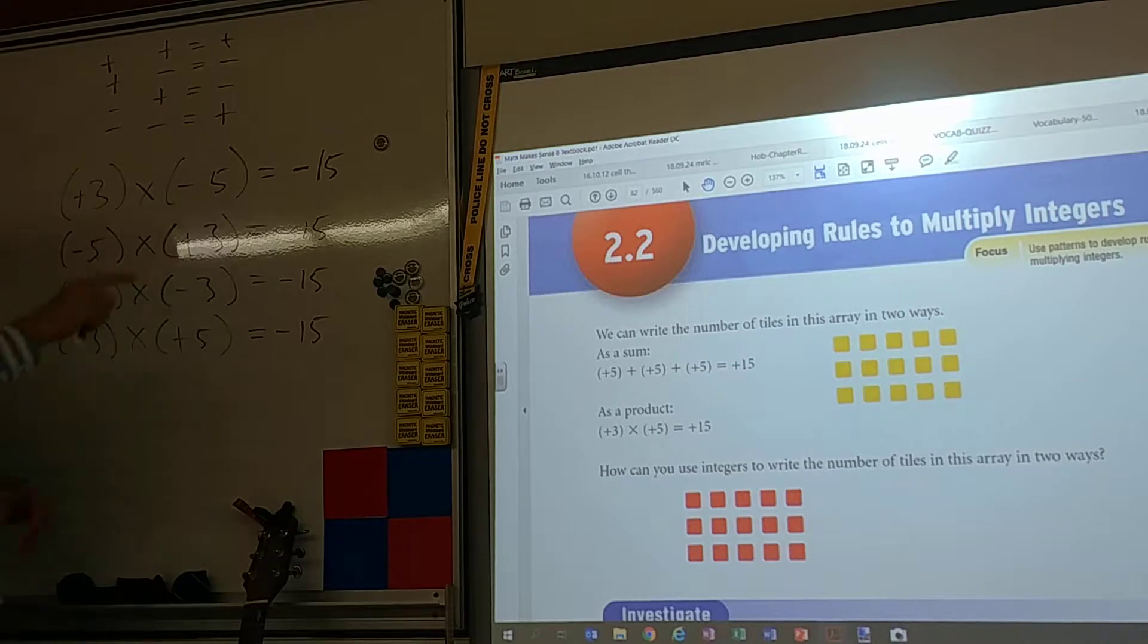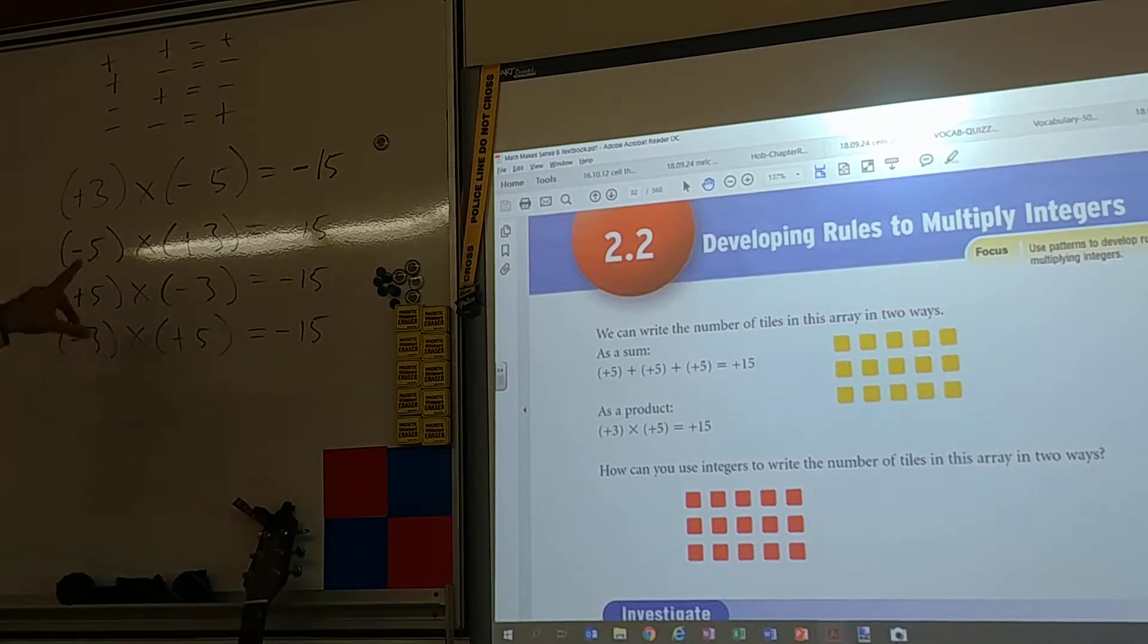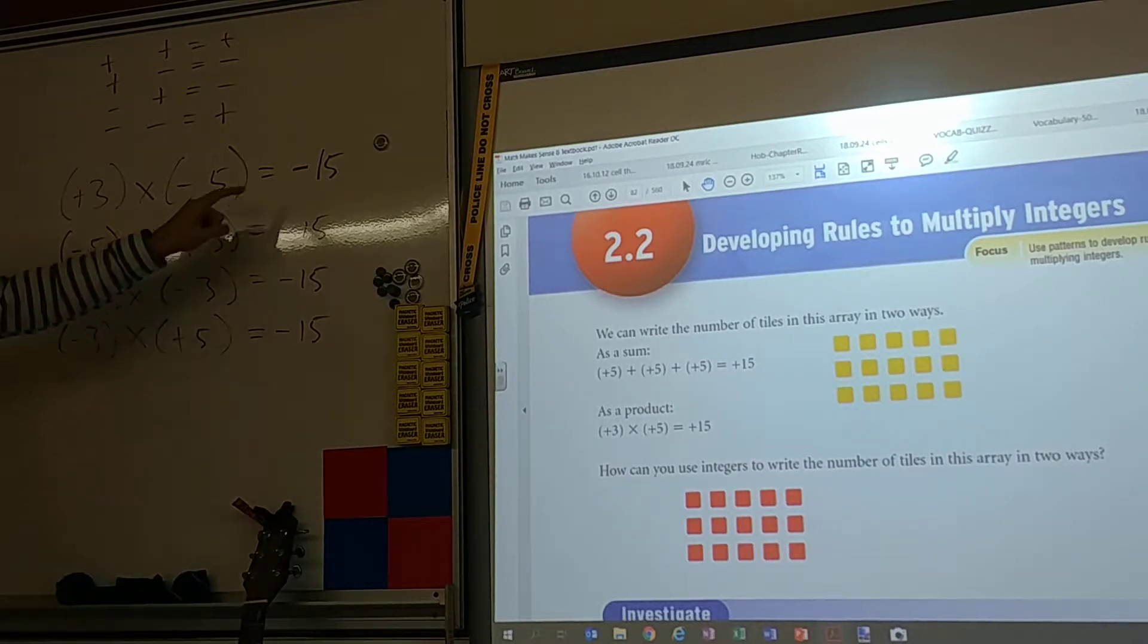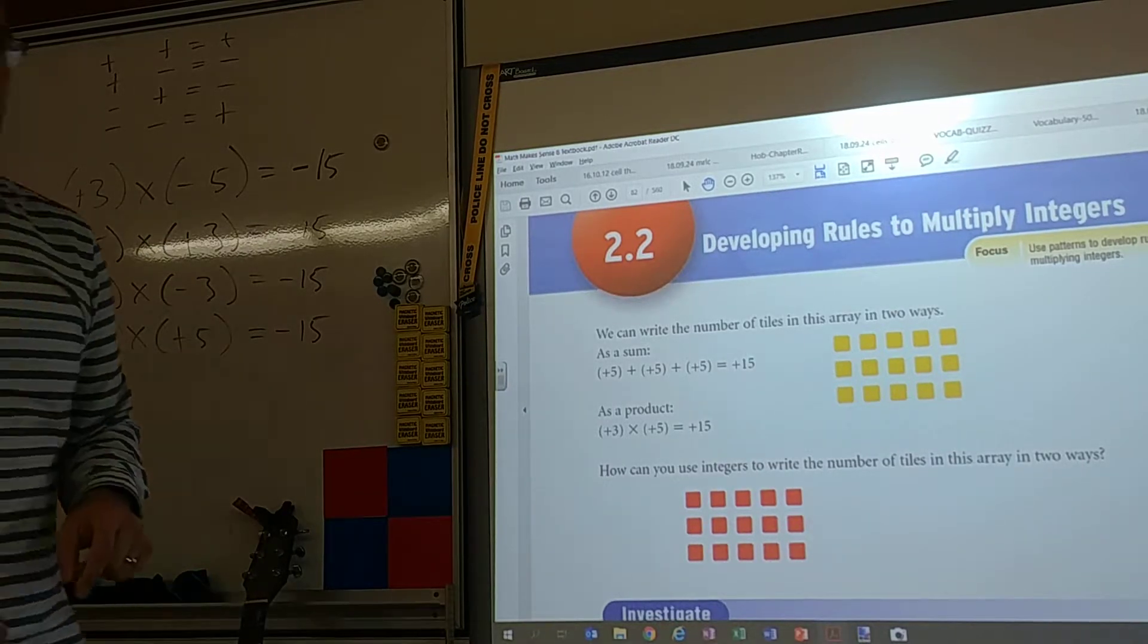Same, same, going up. Different, going down. Different, going down. Different, it's going down. It will show I can flip the 3 and the 5 all I want. I can flip the positive and the negative all I want. It's still going to come out to the same answer.